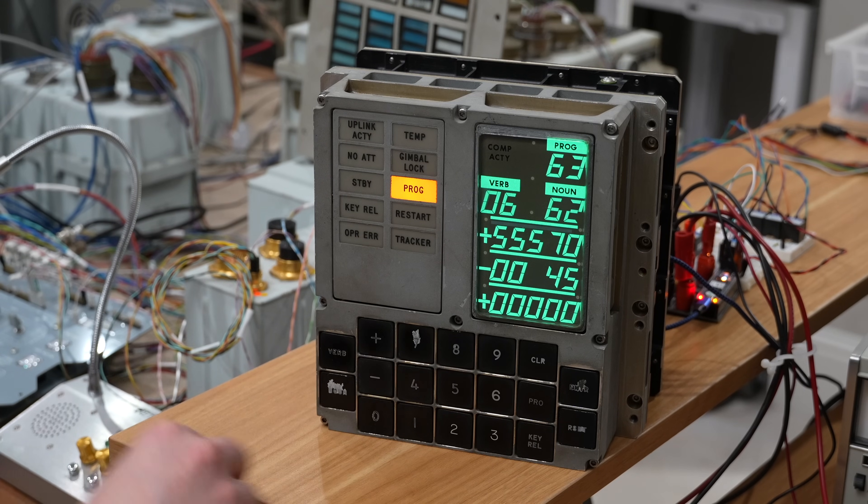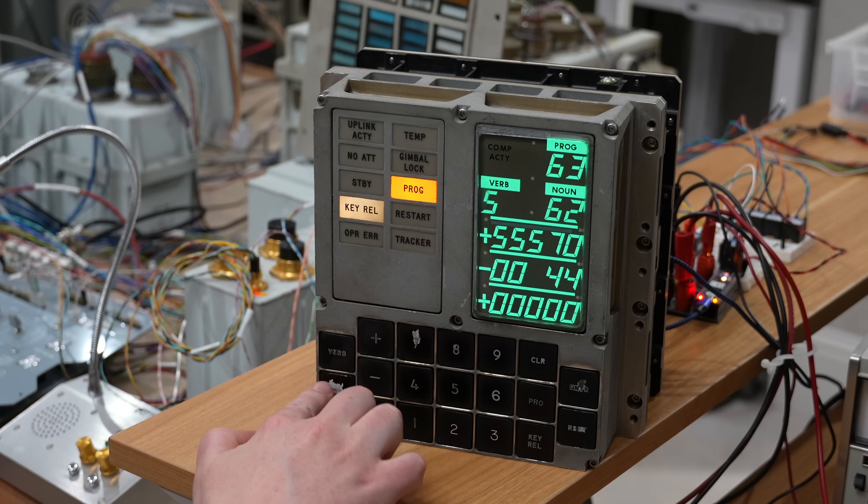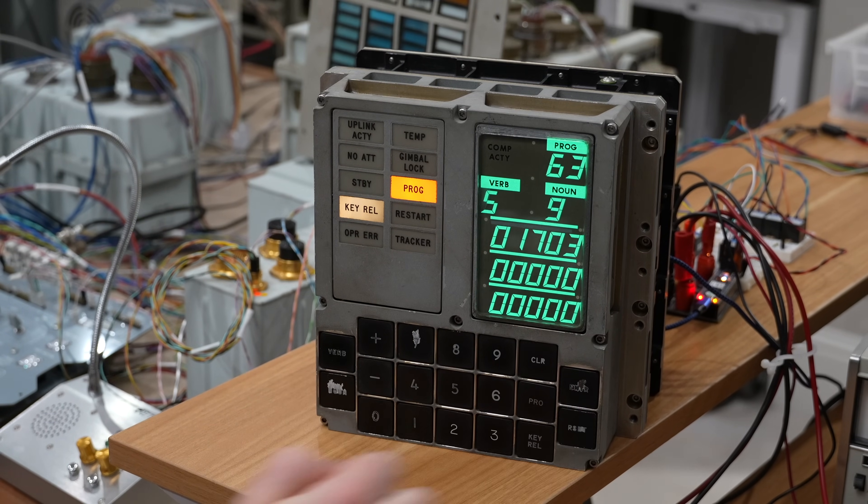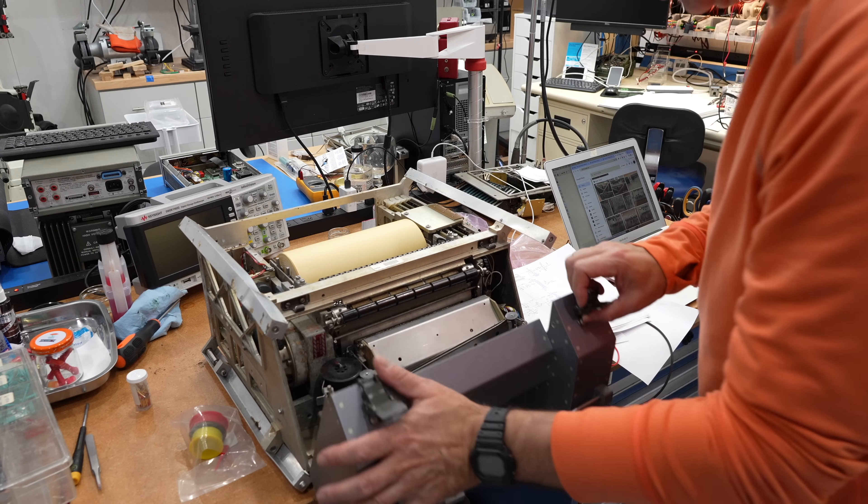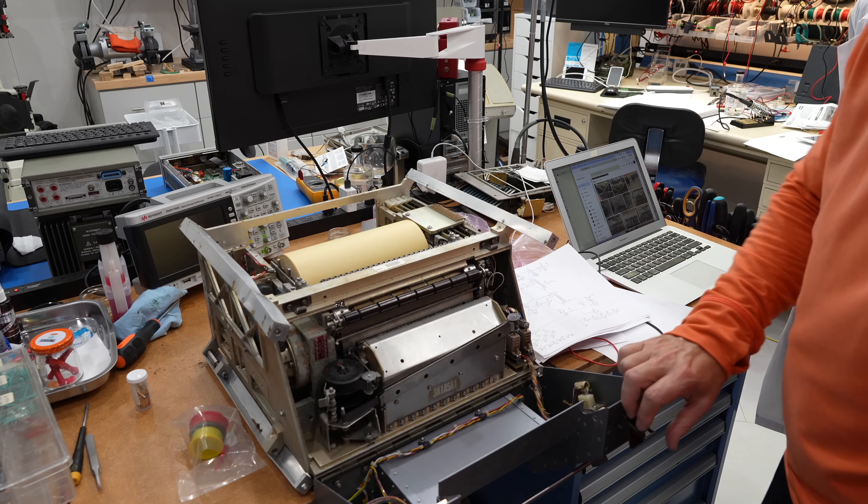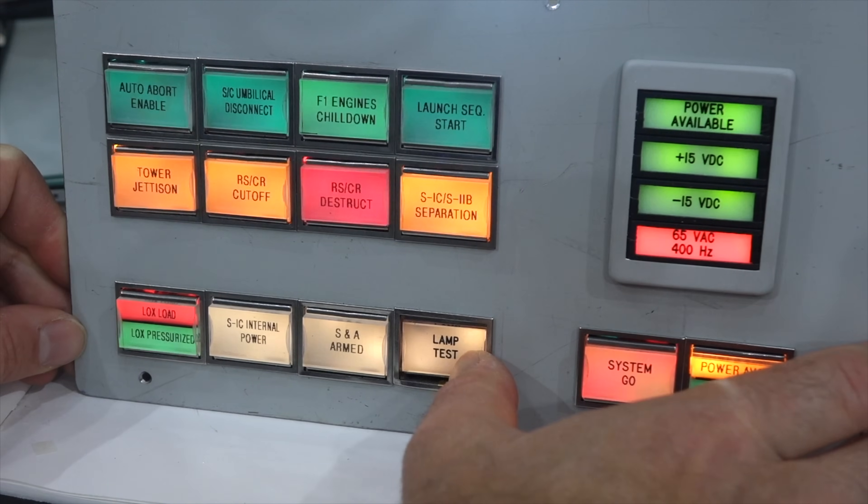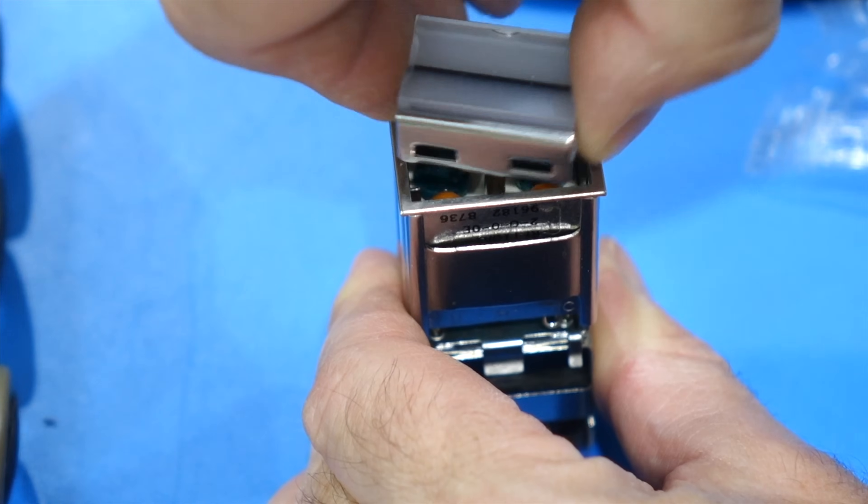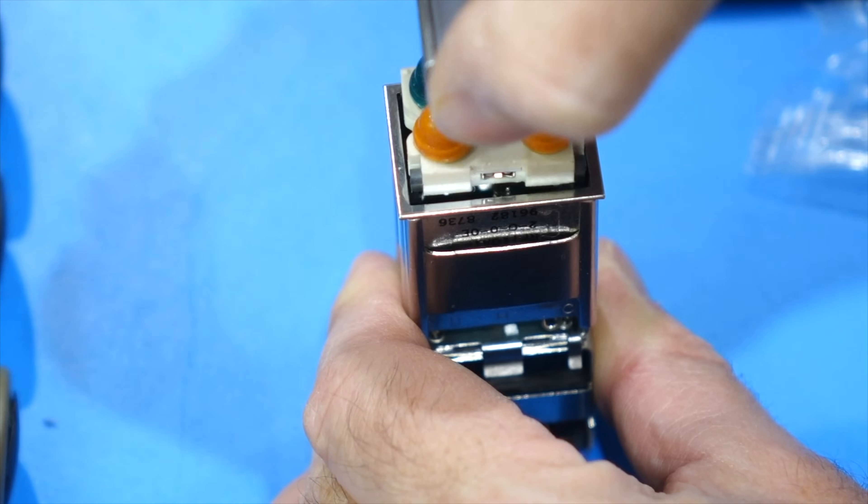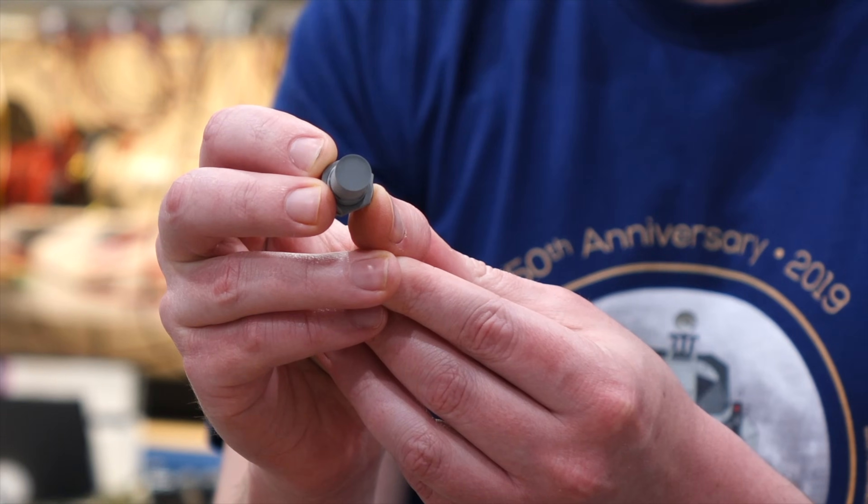Hello and welcome back. If you follow the channel, you know that we are enamored with all things Apollo, and occasionally shuttle too. And we also get amused by little things like genuine switches and lights, as nothing is mundane in the Apollo program. We've previously played with the twist light buttons found in the Houston control room, and some genuine LEM indicators.